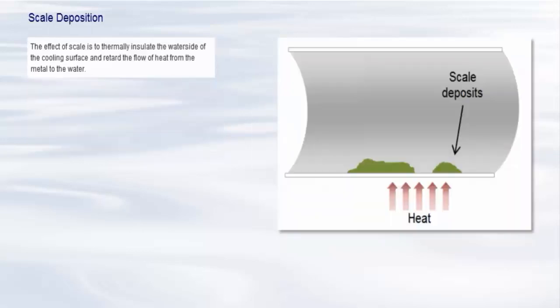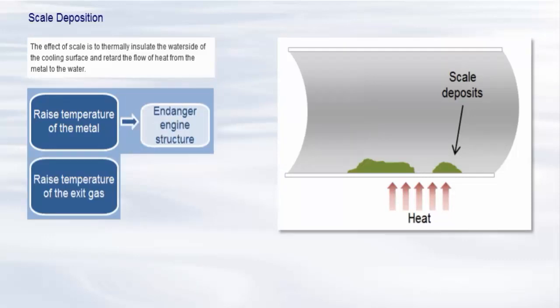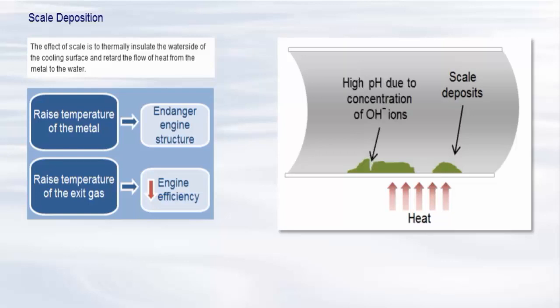The effect of scale is to thermally insulate the water side of the cooling surface and retard the flow of heat from the metal to the water. The only way the heat can get out is by raising the metal temperature and by raising the exit gas temperature from the engine. The former may endanger the engine structure, the latter will reduce engine efficiency. The presence of scale on the heat transfer surfaces of the cooling circuit can lead to a situation where the alkalinity in the system begins to concentrate by evaporation within the scale deposit. High concentrations of OH alkalinity can attack pipework and in particular lead to rapid failure of aluminium pipework and components.